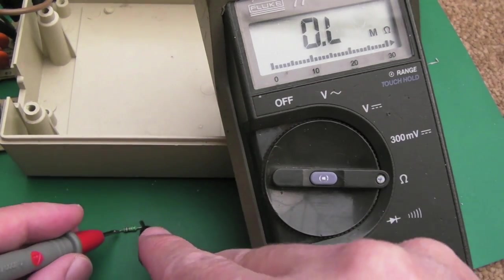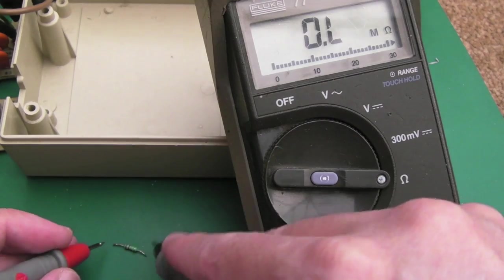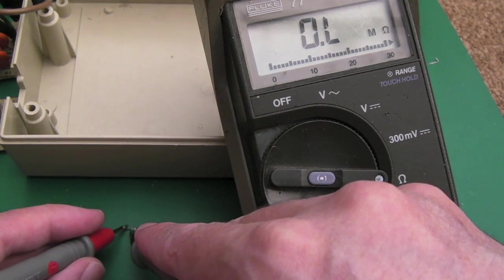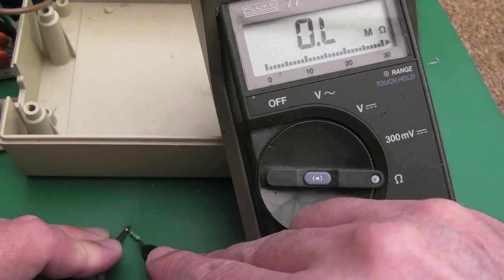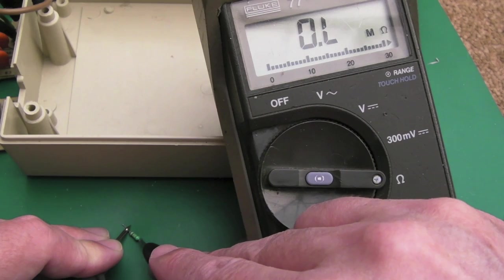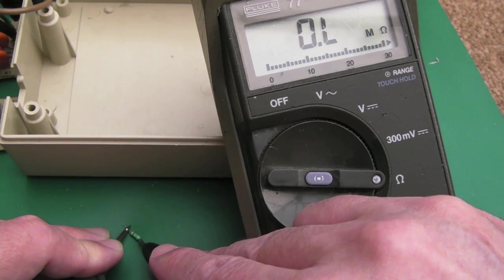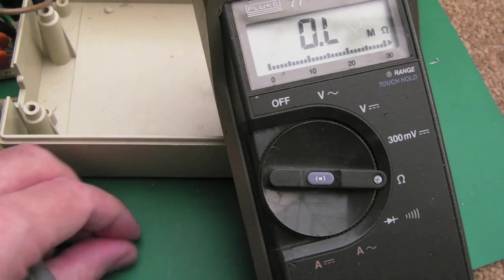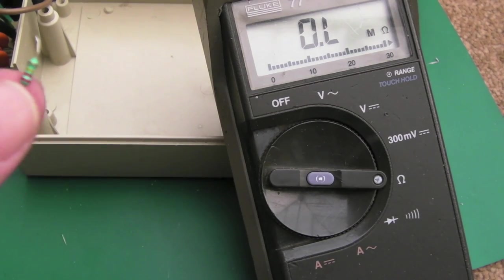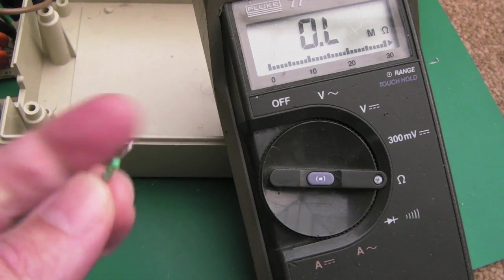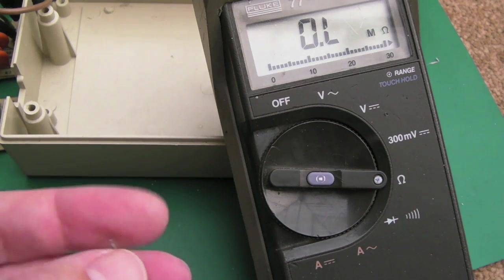There could be another fault that's caused this to go. Obviously the transistor is all right as far as I can gather. Maybe the transformer's failed or something, or maybe something else on the other side of the transformer caused it to pop. I don't know. But it's zero ohms, nothing. So I think the first thing I'm going to do is get another resistor, fit it on there, and perhaps just give it a go.